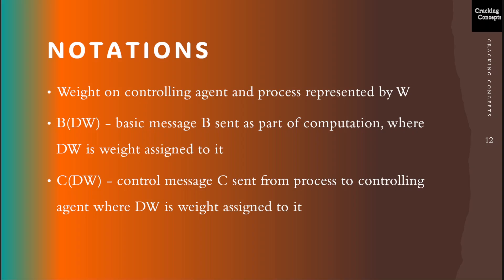Now discussing the notations used here. The weight on the controlling agent and the process will be denoted by the letter W. B(DW) is a basic message B, which is part of the computation, where DW is the weight assigned to this basic message. C(DW) is the control message sent from the process to the controlling agent, where DW is the weight assigned to it.